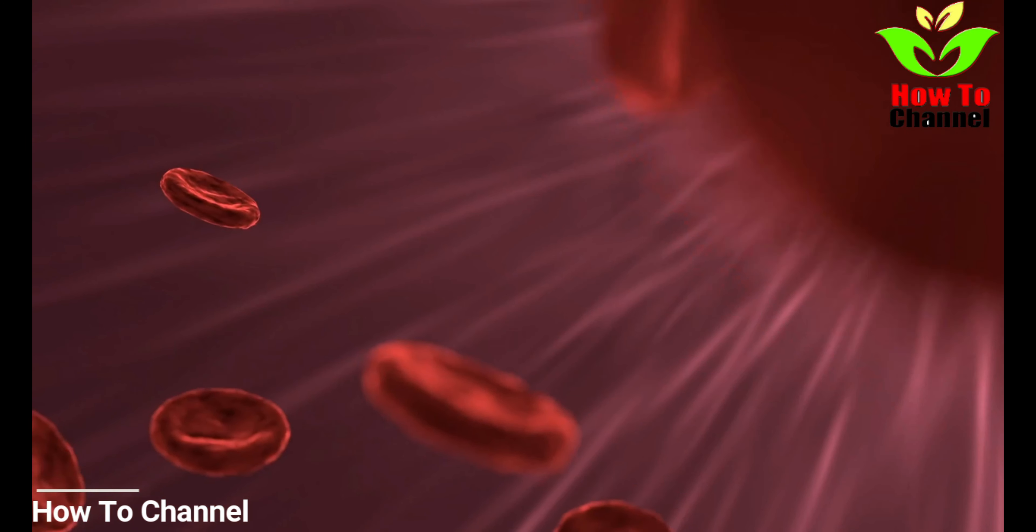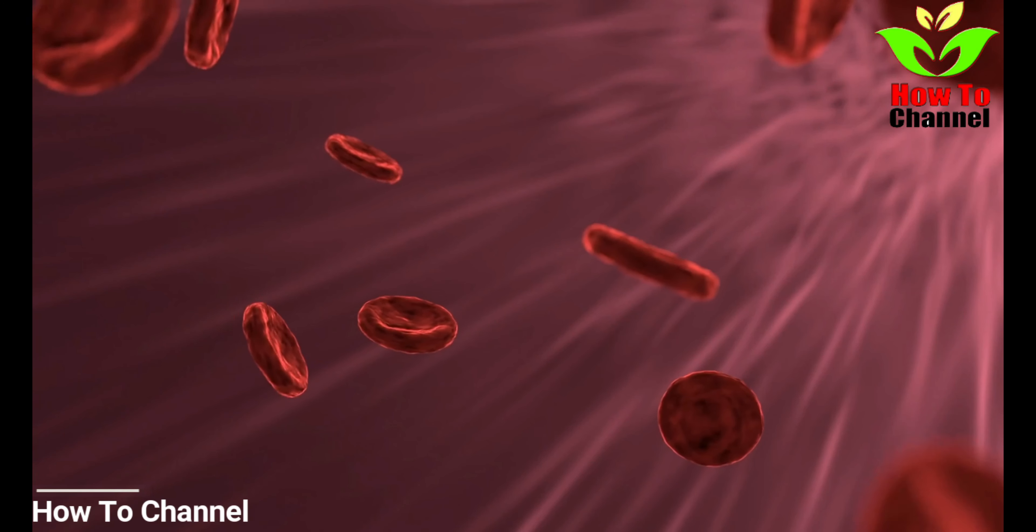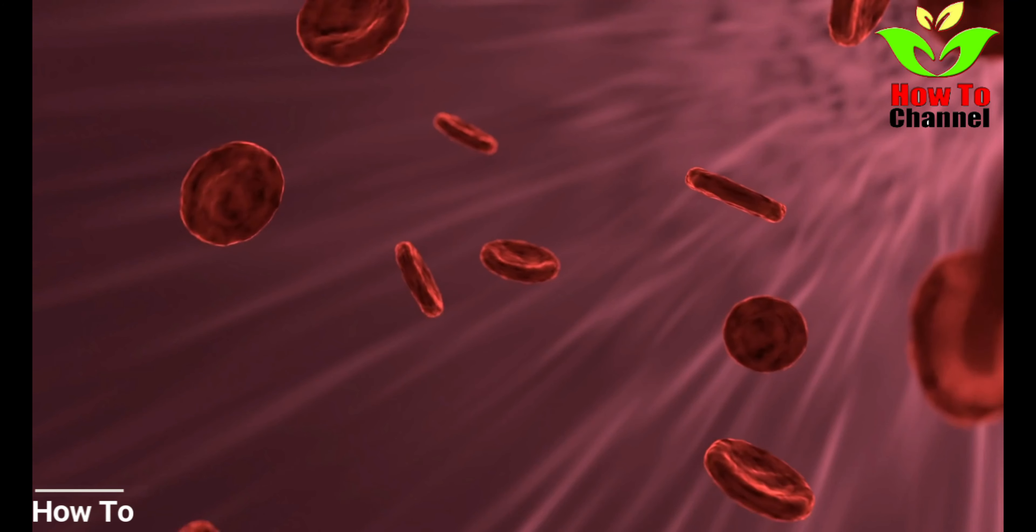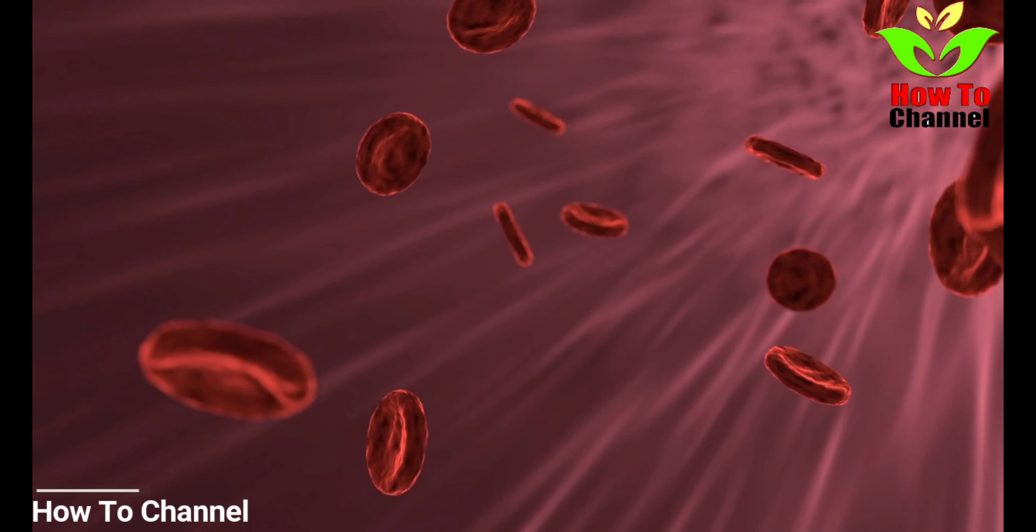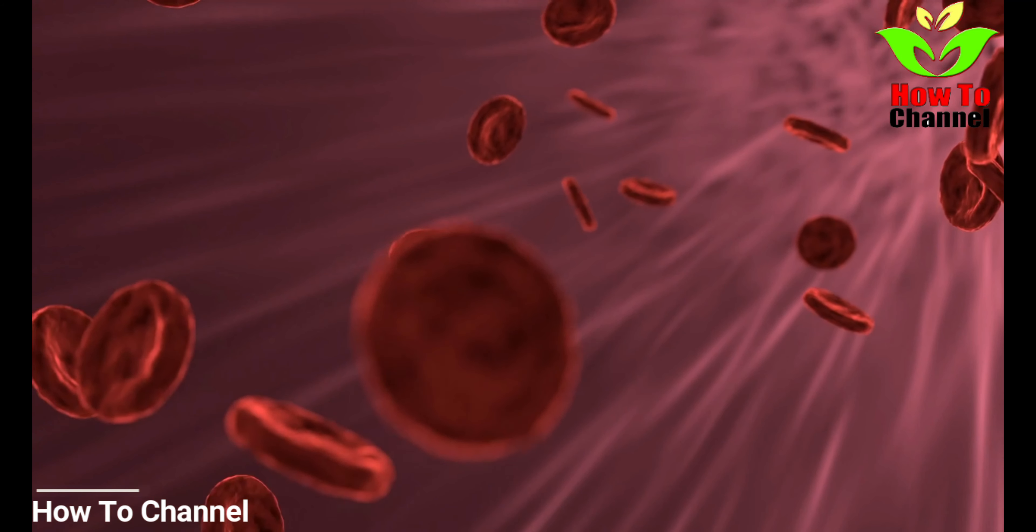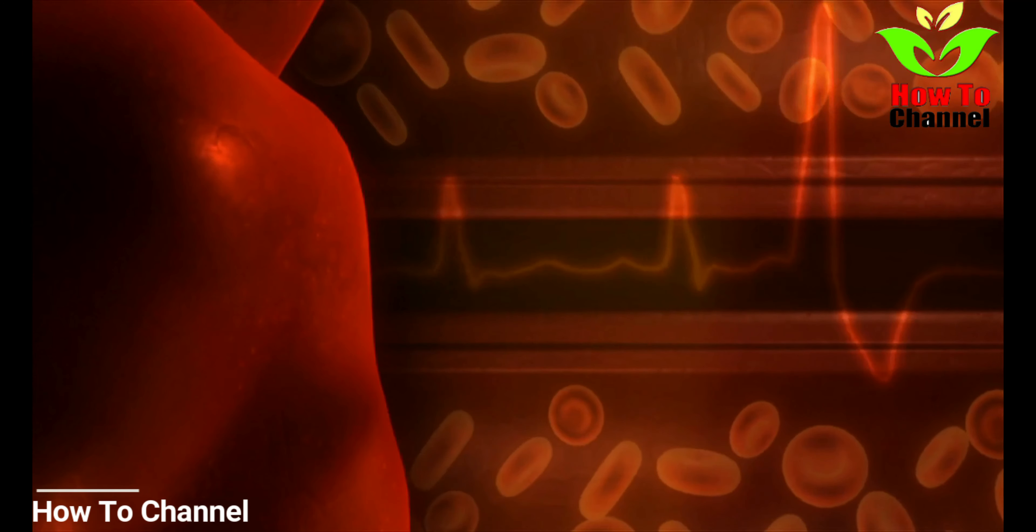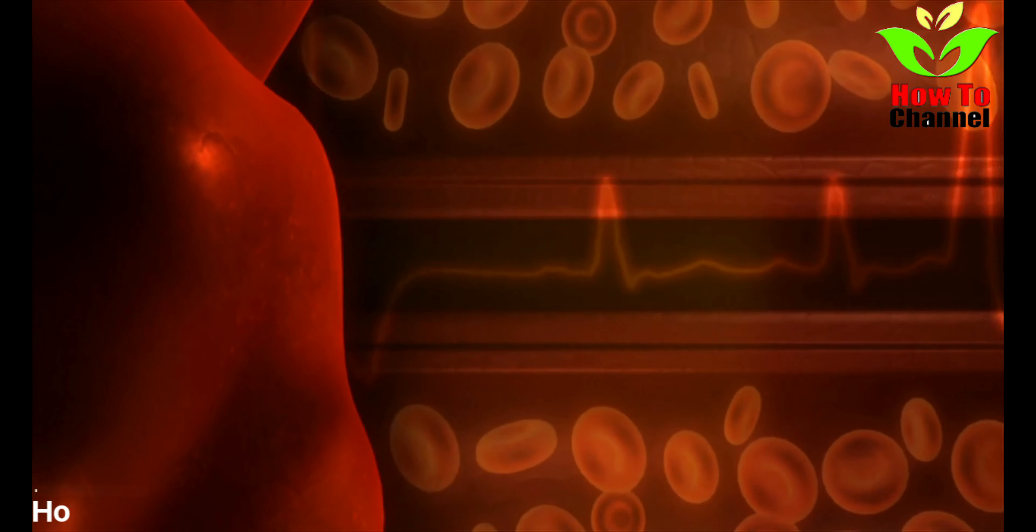Foods that unclog arteries naturally and prevent heart attacks: Flaxseed. These are the most underrated seeds when it comes to health benefits. Those tiny but mighty flax seeds are a great source of fiber, minerals, vitamins, and fats.